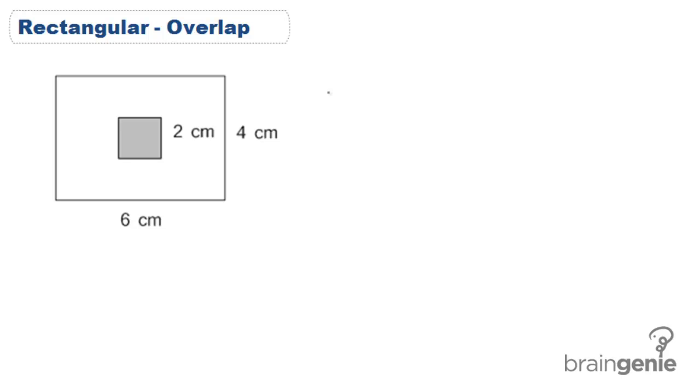To do that we'll first find the area of the big rectangle and then the area of the square and subtract.